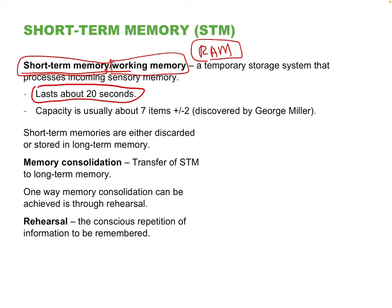Our brain's working memory lasts around 20 seconds. Someone tells you their name — unless you do something with it, it will literally fade in 20 seconds. What we can do to hold on to it is to rehearse it. Rehearsal is the repetition of that information. It's like if someone told you a phone number while you're on the phone — you race to find a pen and paper because you know unless you write it down, that piece of information is going to fade. Repeating it over and over is called maintenance rehearsal.